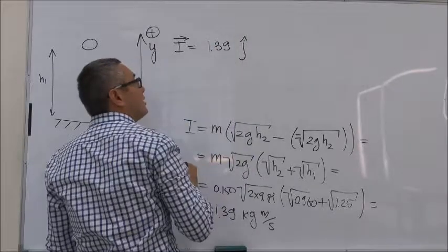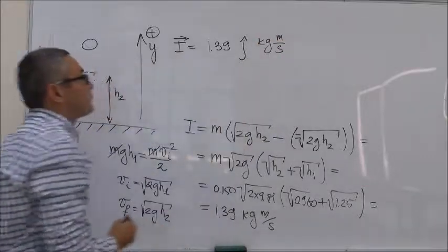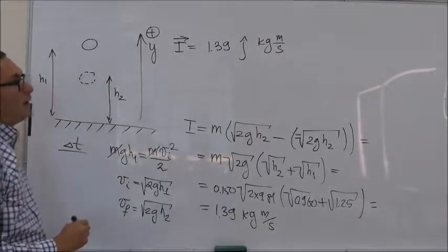Because we are using the y-axis, so unit vector J, kilogram meter per second. So that's the impulse.